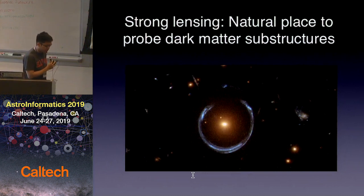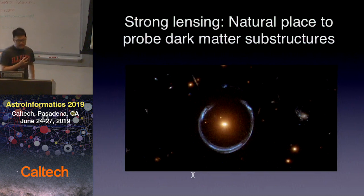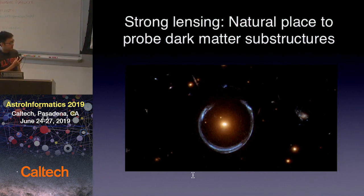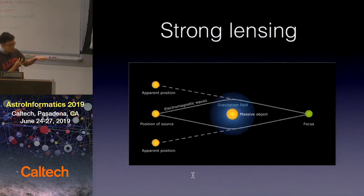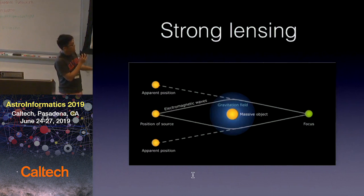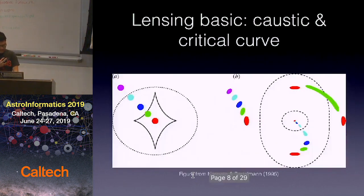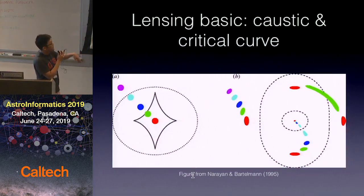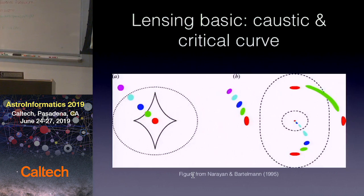It turns out that strong lensing is actually a pretty good place to detect these subhalos. Dark matter subhalos are really dim, so there's no way to see stars in them. But if you look at strong lensing, you can see deflections on the lensing arc. Strong lensing works by having a gravitational potential between the observer and the source galaxy, bending the light. Depending on where the source galaxy is placed, you'll see shear-like distributions, or a beautiful Einstein arc, or an Einstein cross.